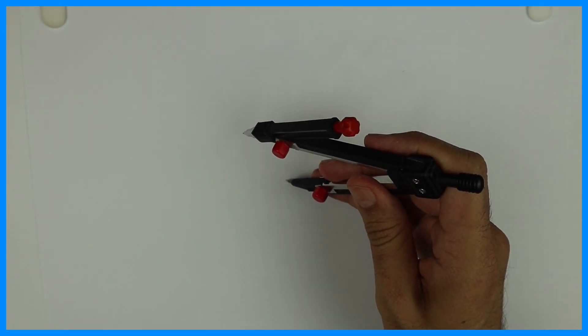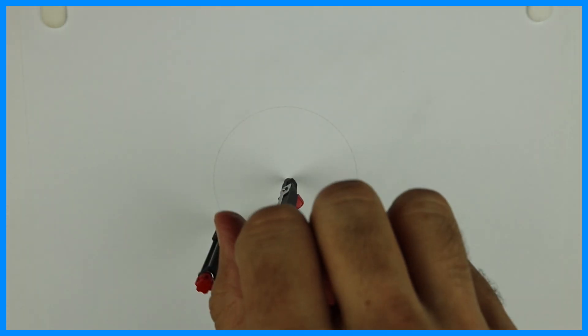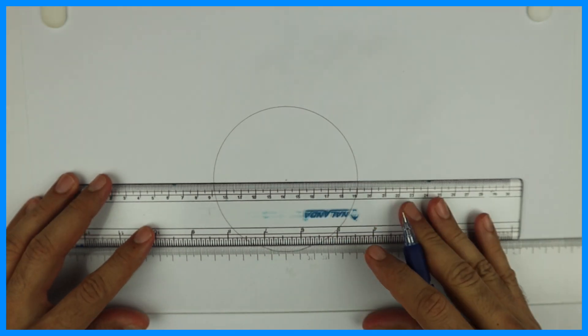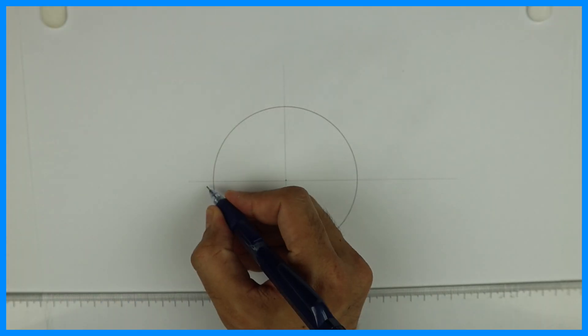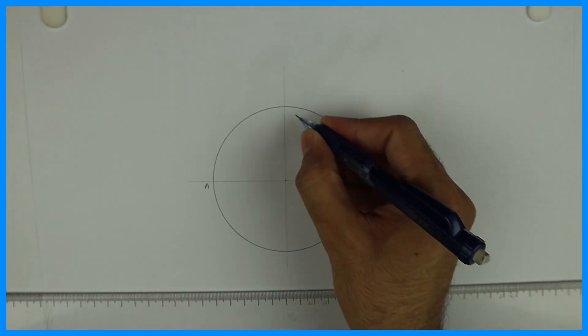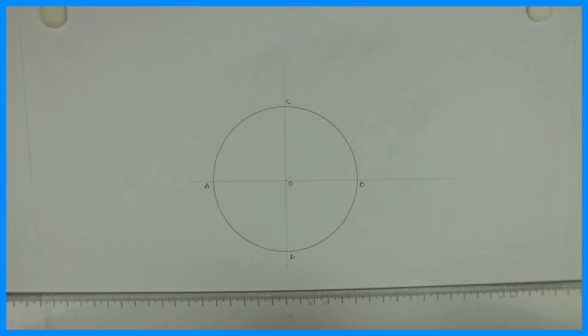First we will draw radius 50, that is diameter 100, then we'll draw line AB which is diameter and CD. See this AB and CD like this.